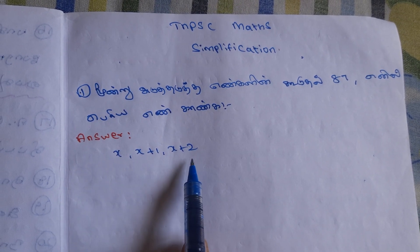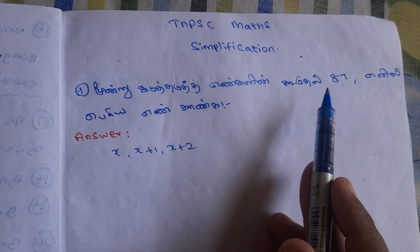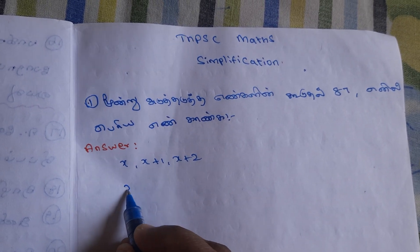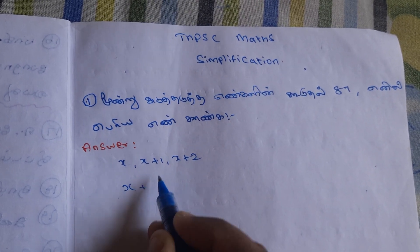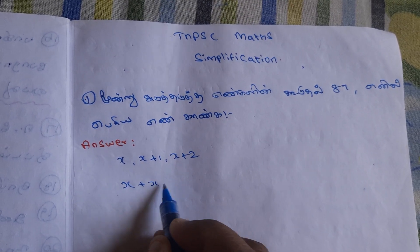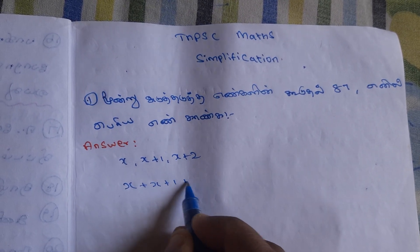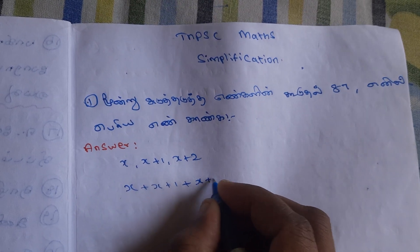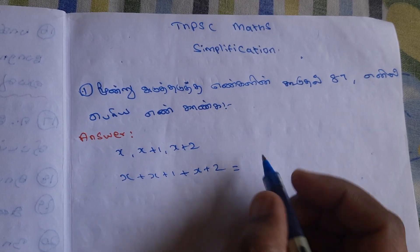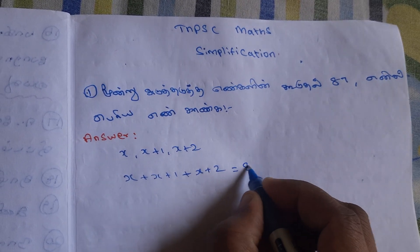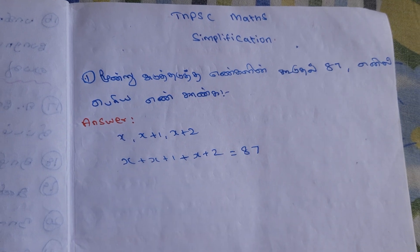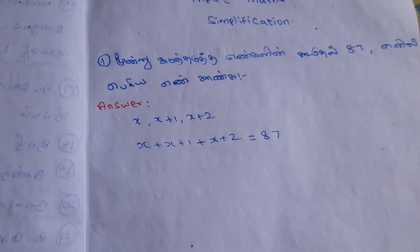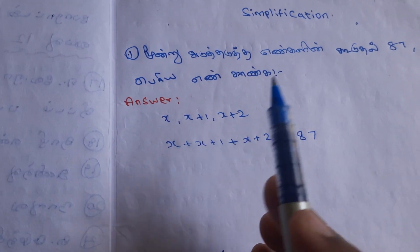Then we multiply the numbers. Since we are checking divisibility by 3, we will see the value comes to 87. Let's look at the values of a.